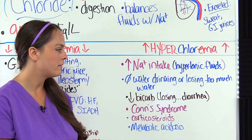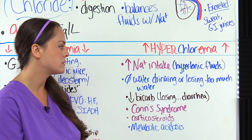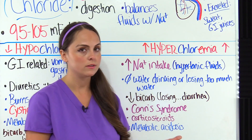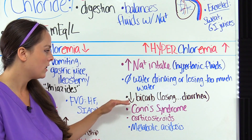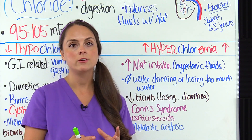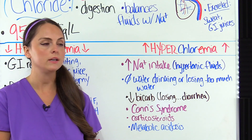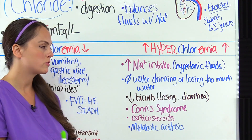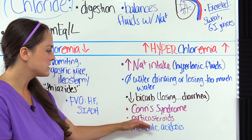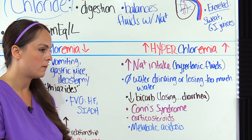A decreased bicarb level can increase chloride because of their opposite relationship, such as losing too much bicarb through excessive diarrhea. Conn's syndrome, where there is increased aldosterone, causes the patient to retain a lot of sodium while excreting potassium, and that can elevate the chloride level. Medications like corticosteroids and metabolic acidosis — possibly from a medication or renal problem — can also cause hyperchloremia.